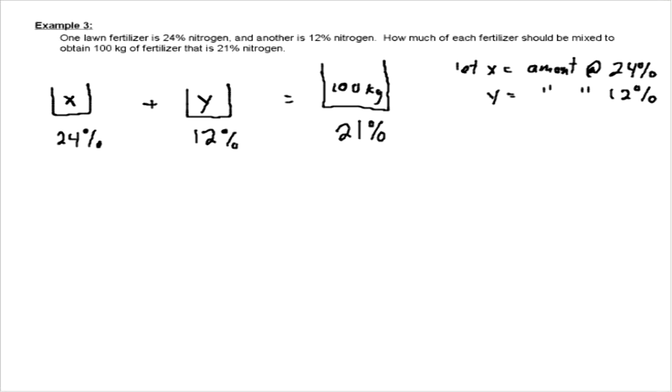Now once we have our variables defined, now we want to write our system of equations. And again, if we have two unknowns, we're going to have two equations. So the first equation comes right from our picture. Here, X plus Y has to equal 100, so that's an easy one, that's the amount. Now the second equation is going to be based on percentages.